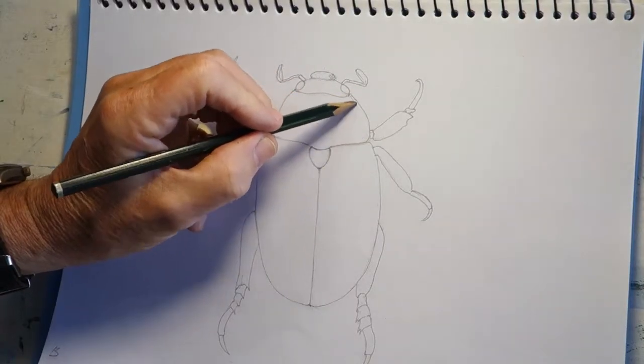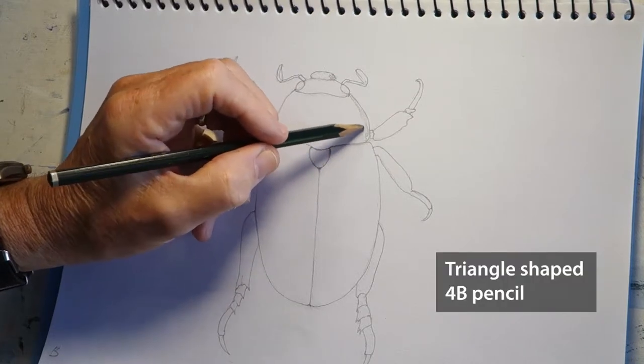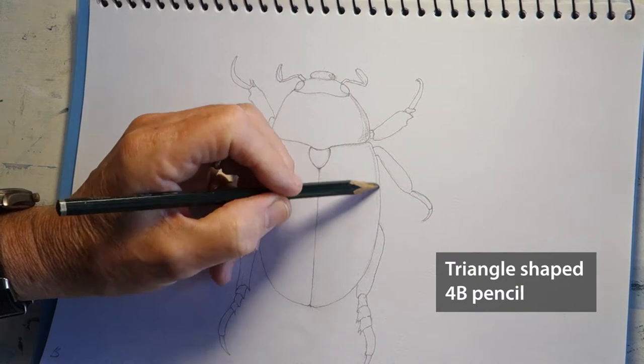Another important aspect of shading is your strokes should follow the contour of the object, like so.